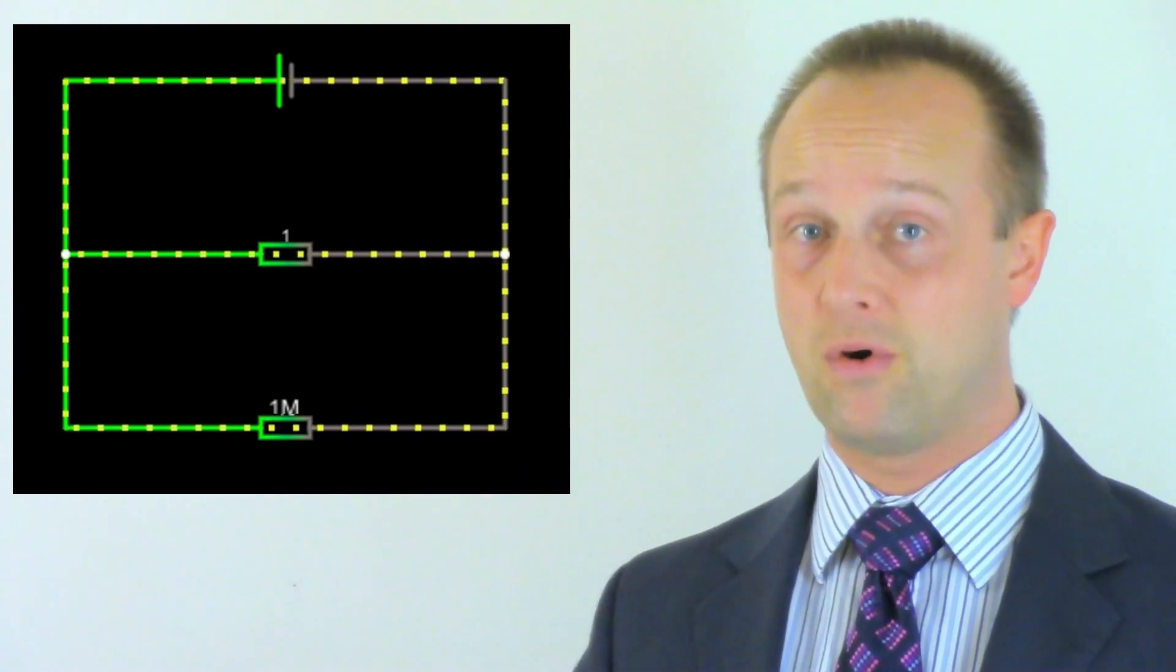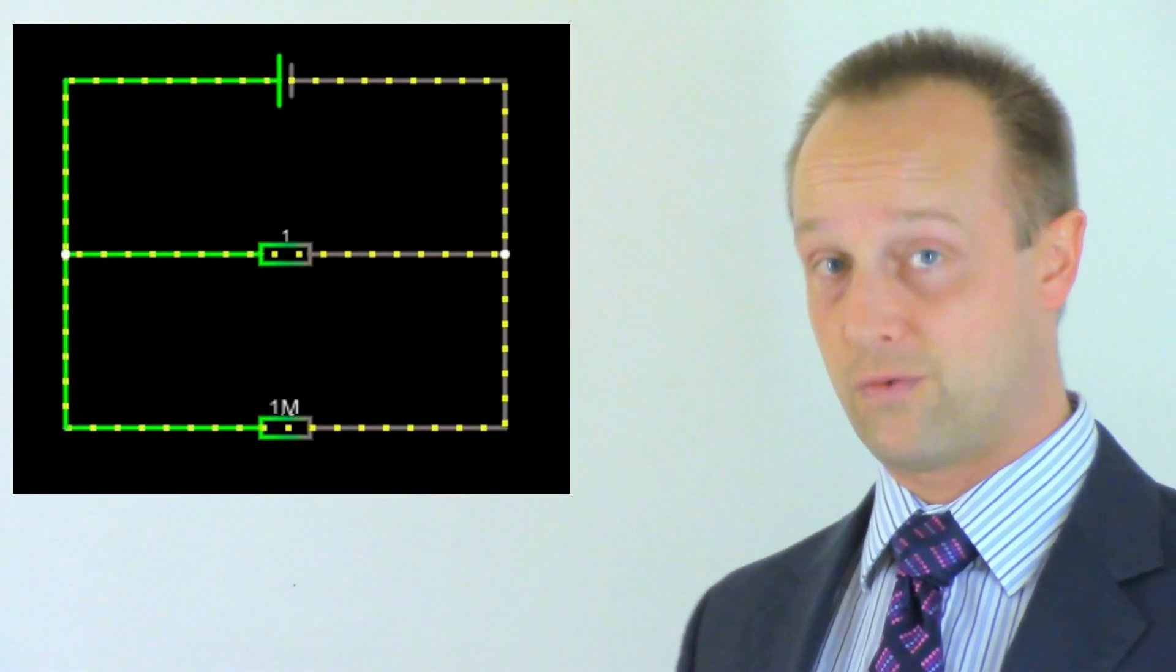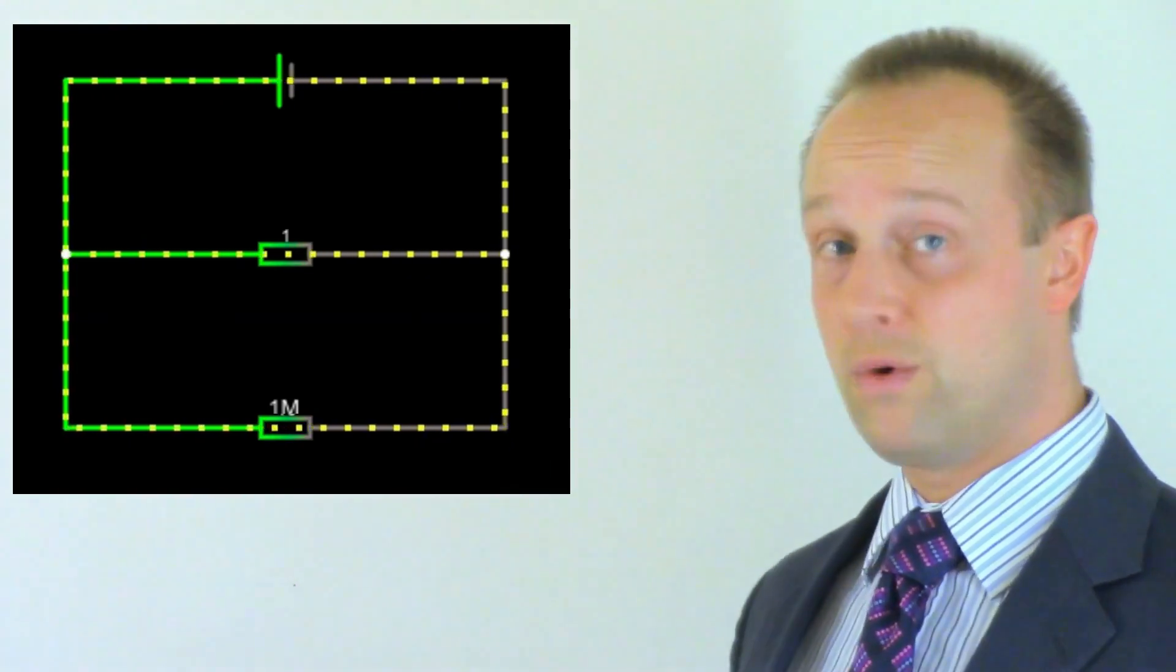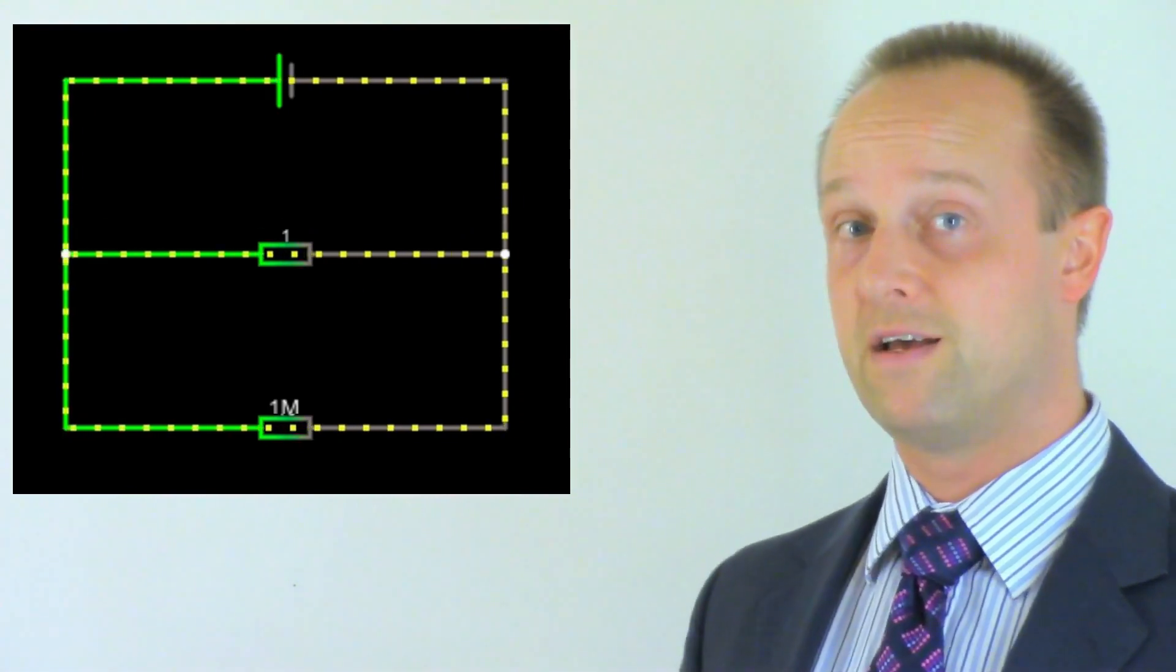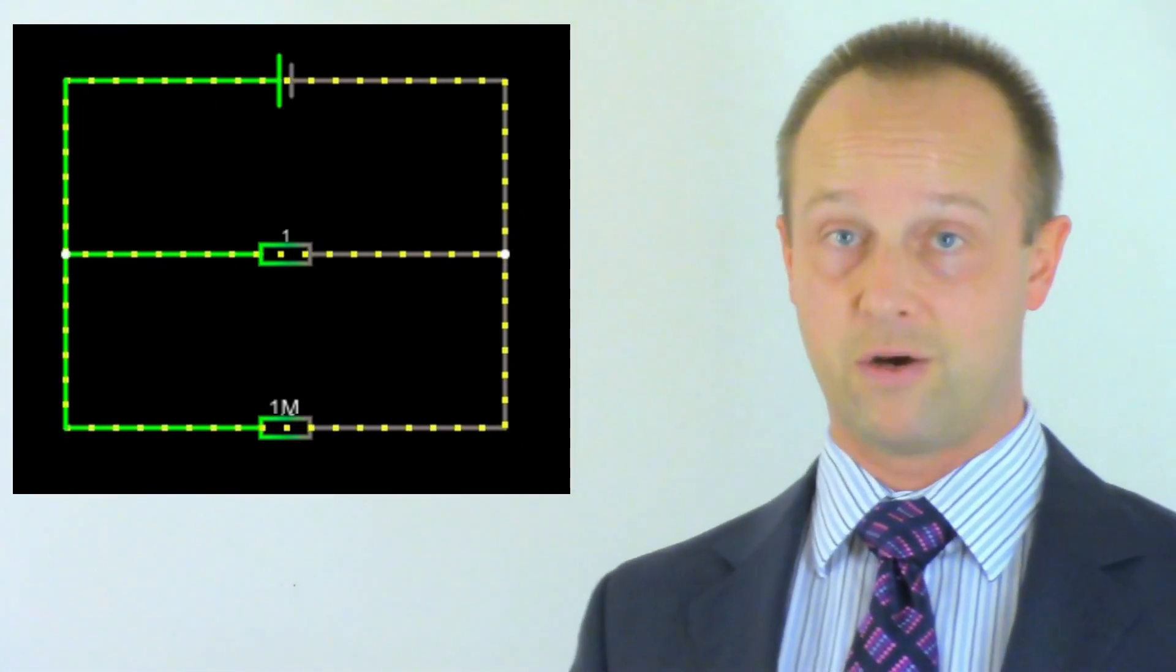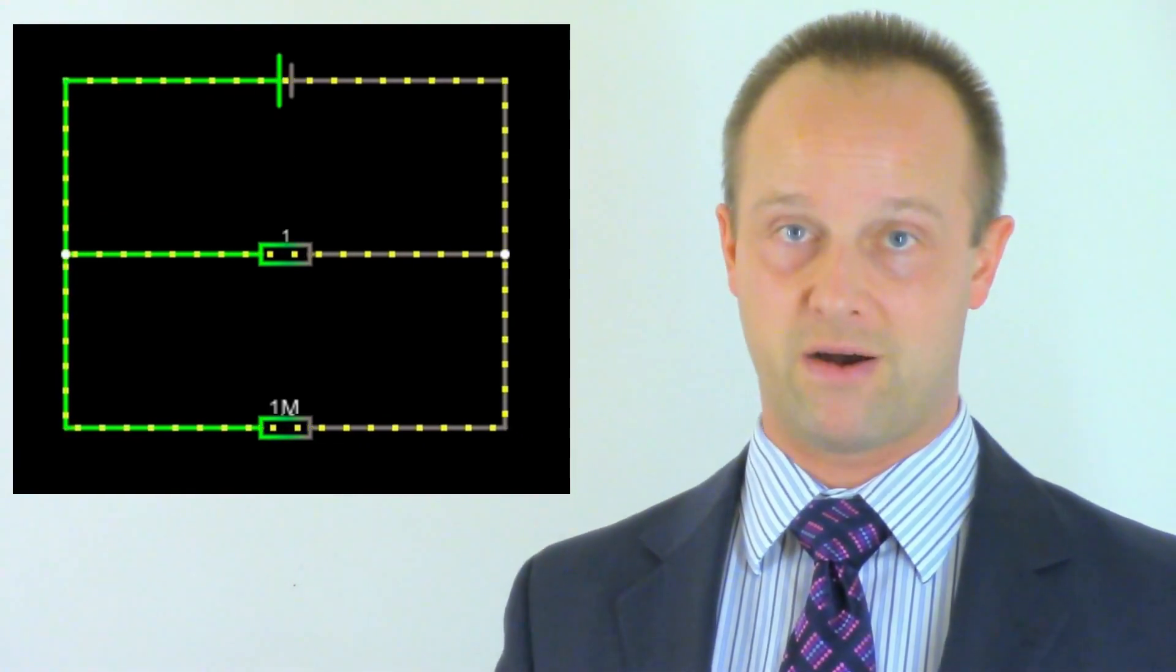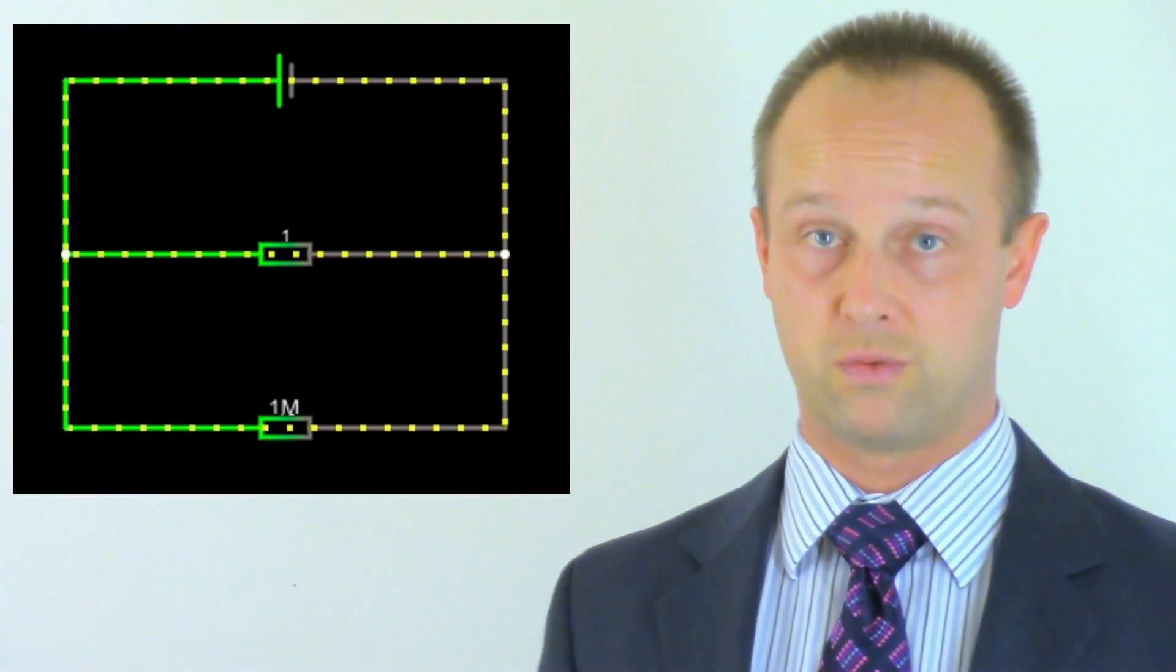But a tiny bit more will also be able to go through the 1 megaohm resistor. So even though we've added a really big resistance here, we've actually lowered the total resistance. Anytime you put any resistor in parallel, you lower the overall resistance.